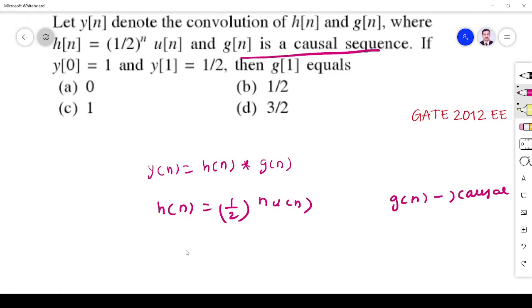So we know y of n is equal to convolution. The formula is k equals to minus infinity to infinity, g of k and h of n minus k.